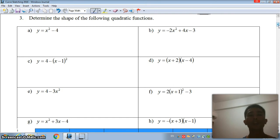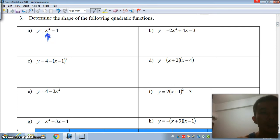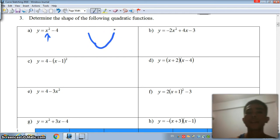Very quickly, I'm just going to show you the shape. As you can see over here, this is a positive x-square. We will have a u-shape. This is a negative x-square. We will have an n-shape.